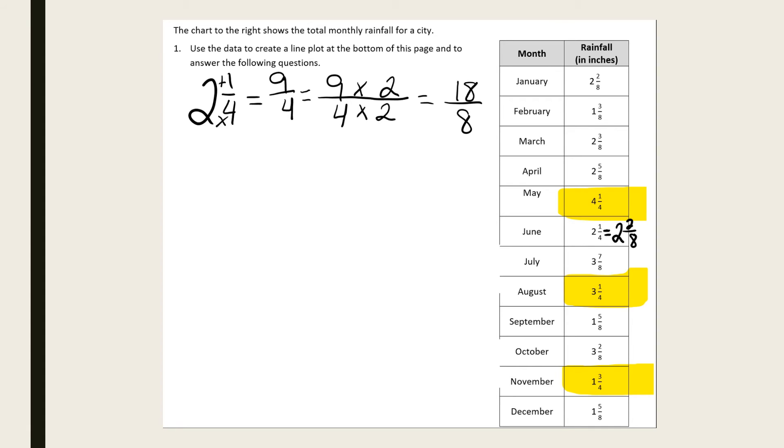Once you have those switched over, at the bottom of the paper, we're going to make a straight line and label it with our whole numbers.